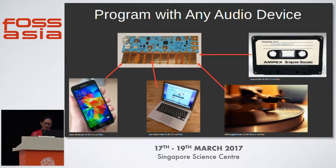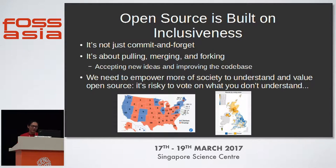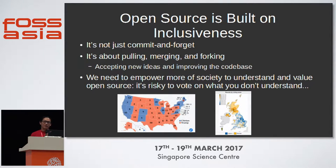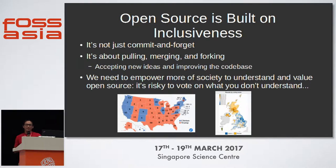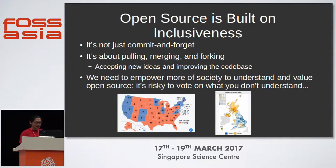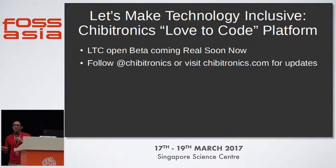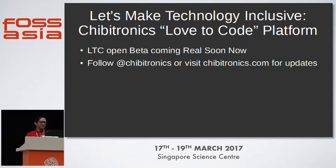You can use this technology to allow Love to Code to be programmed with almost any device, from smartphones to laptops — if you can play music from a browser, you can probably use our system. At the end of the day, the reason why we're doing this is that open source is built on inclusiveness. It's not just about commit and forget. The whole point of why people come together at conferences like this is about pulling and merging and forking — accepting new ideas, improving our code base, sharing code and creating community. I think it's important to empower more of society to understand and value open source, because it's risky to vote on things you don't understand. That's my talk about making technology more inclusive. The Love to Code platform will be in open beta soon — follow at Chibitronics or visit chibitronics.com for updates.